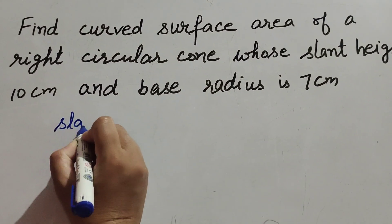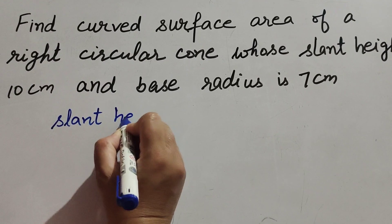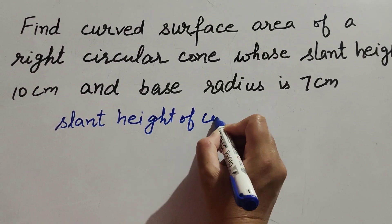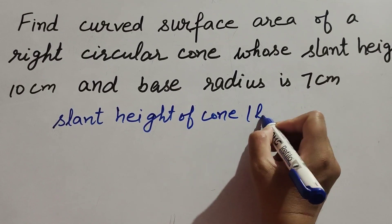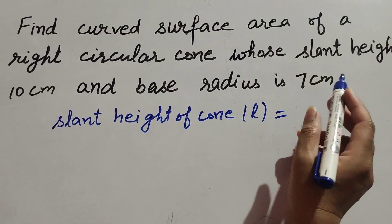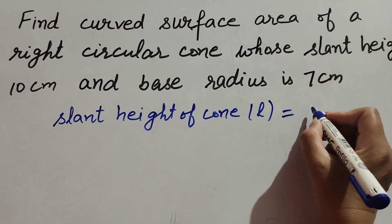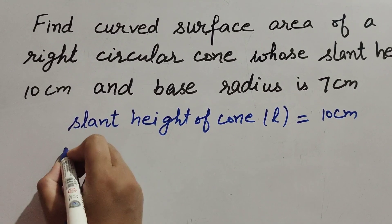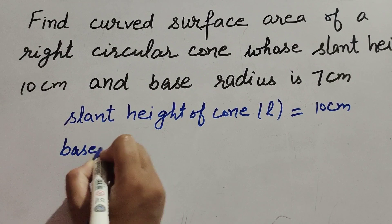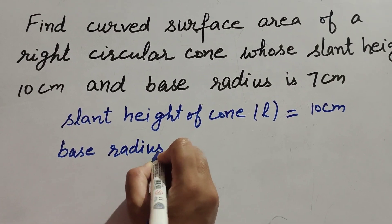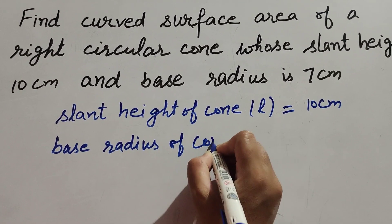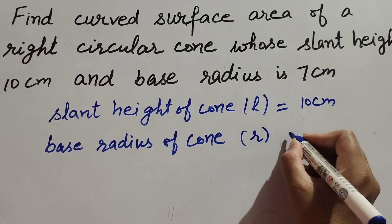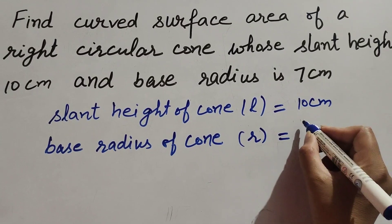In this question, the given information is slant height of cone, denoted by l, equal to 10 cm. Base radius of cone, denoted by r, equal to 7 cm.